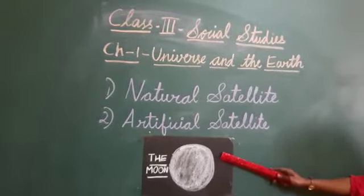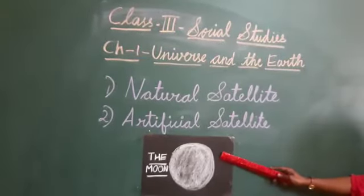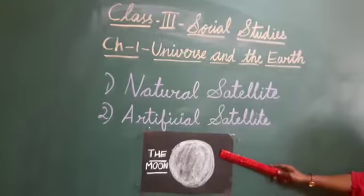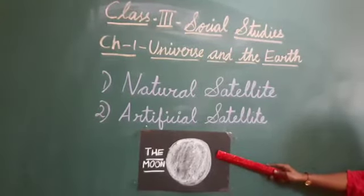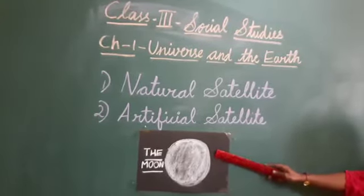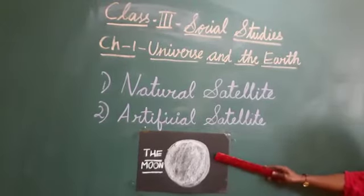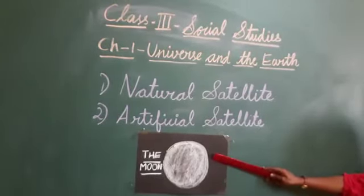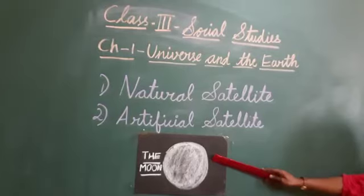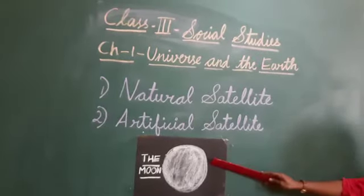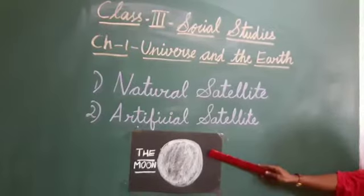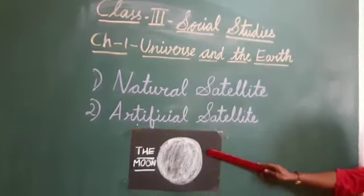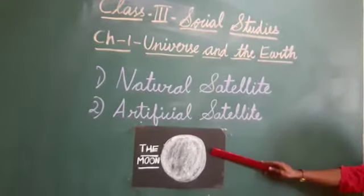The moon is smaller in size compared to the earth, and it does not have its own heat and light. Just like the sun has its own light, the moon does not. It gets the light from the sun and shines beautifully during the night time.